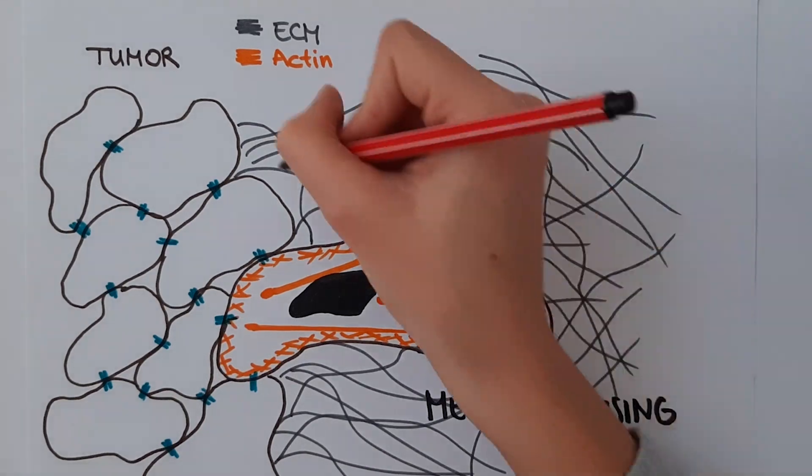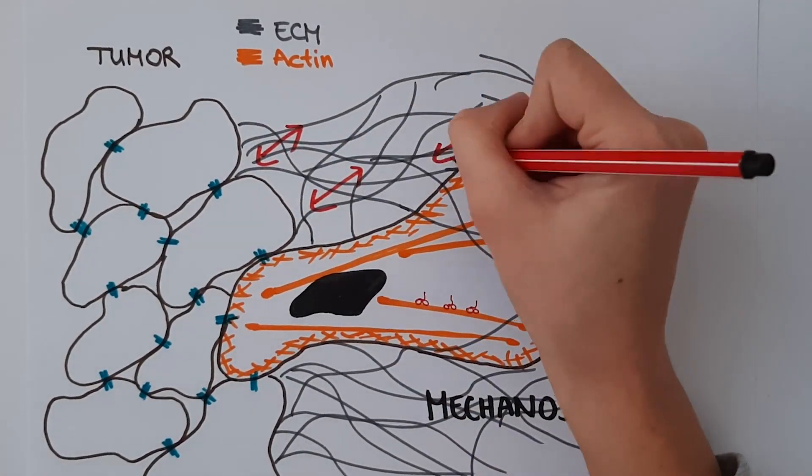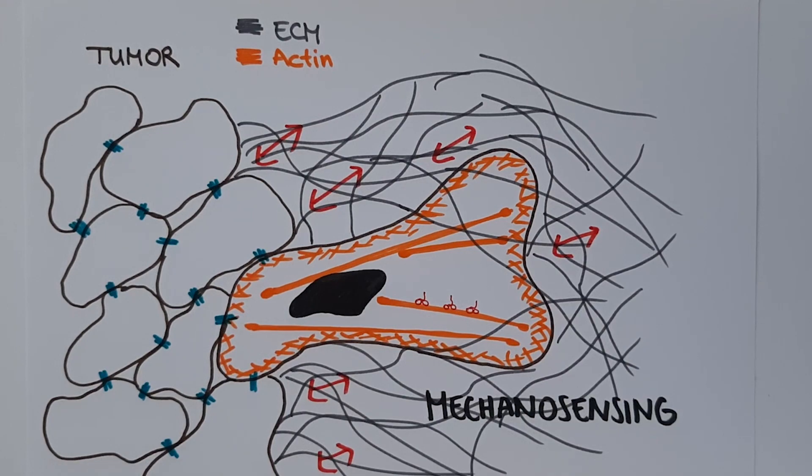In turn, the contractility of the tumor generates a tensile strain, which reinforces the aberrant ECM organization.